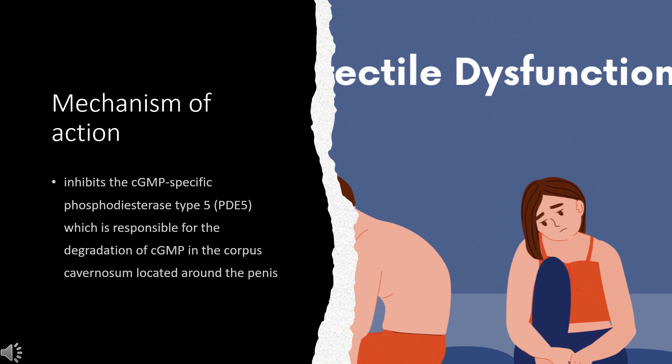Mechanism of Action. Avanafil inhibits the cGMP-specific phosphodiesterase type 5 (PDE5), which is responsible for the degradation of cGMP in the corpus cavernosum located around the penis. Sexual arousal results in the local release of nitric oxide, which in turn stimulates guanylate cyclase to produce cGMP. Elevated levels of cGMP result in local smooth muscle relaxation and increased blood flow to the penis — i.e., an erection. As PDE5 inhibitors like Avanafil require the endogenous release of nitric oxide to exert their pharmacological effect, they have no effect on the user in the absence of sexual stimulation or arousal.